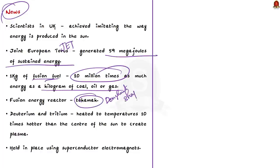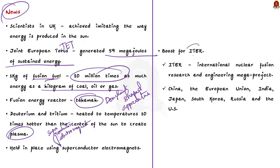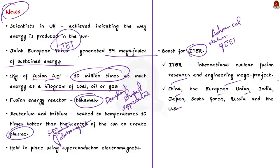The experiment used deuterium and tritium — isotopes of hydrogen — heated to temperatures 10 times hotter than the center of the sun to create plasma, held in place under superconducting electromagnets as it spins around, fuses, and releases tremendous energy as heat. The record and scientific data from these experiments are a major boost for ITER — the larger and more advanced version of the JET. ITER is an international nuclear fusion research and engineering mega-project supported by seven members: China, the European Union, India, Japan, South Korea, Russia, and the US. It seeks to further demonstrate the scientific and technological feasibility of fusion energy.